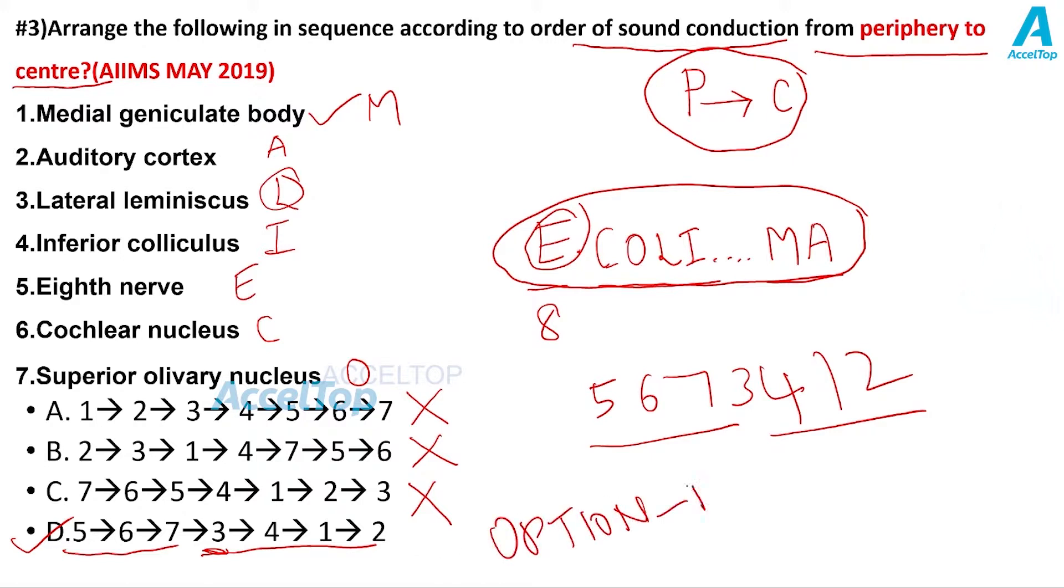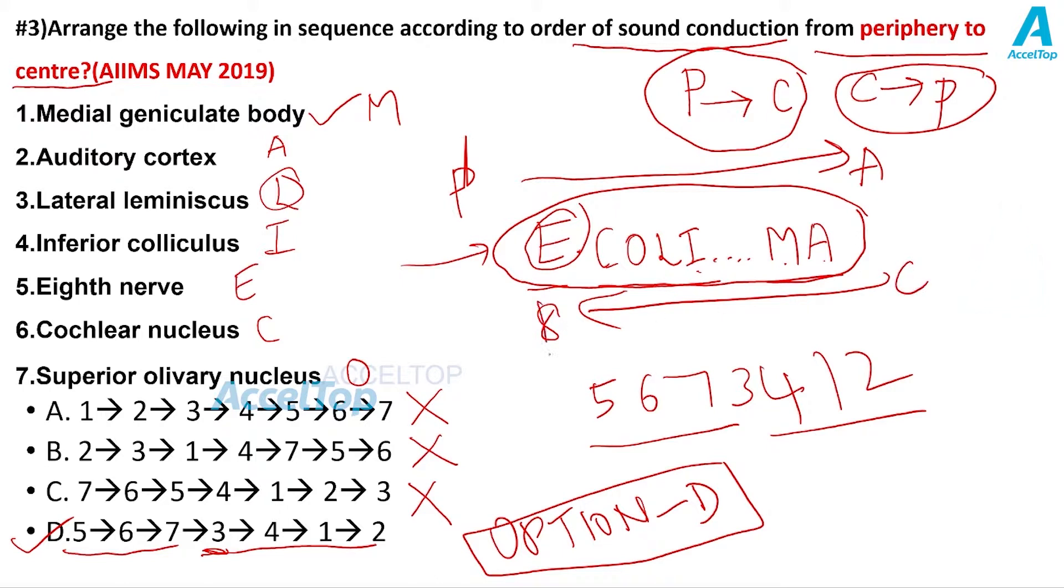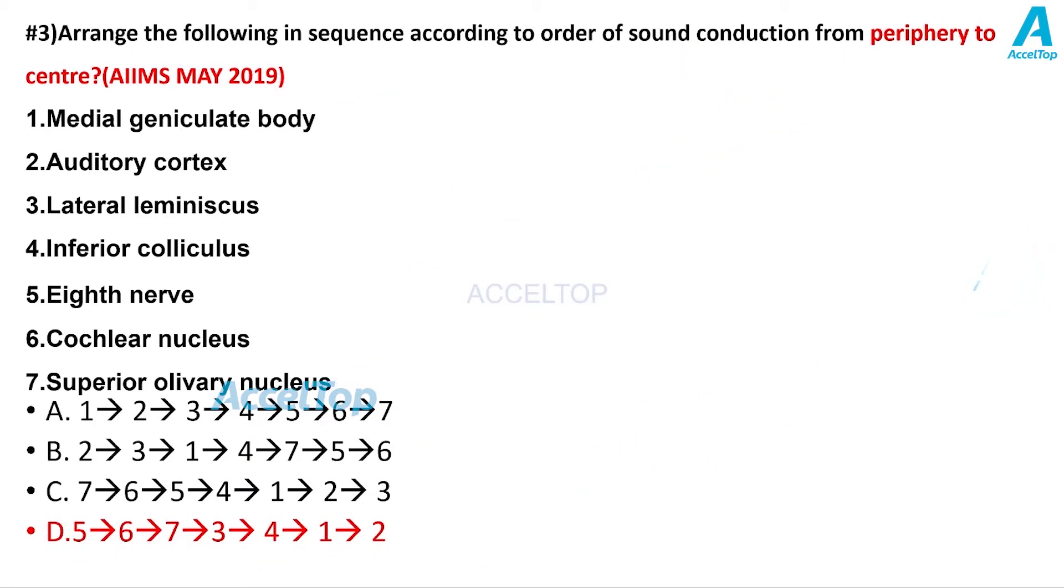So very important thing here is you remember the mnemonic E. coli M.A., auditory pathway. Based on that whatever order they ask, you need not worry. In this question they have asked periphery to center. They have asked to arrange from periphery to center. Probably in the next stage exam they will ask from center to periphery. So then the mnemonic just reverse the mnemonic. If from periphery to center it is E. coli M.A., if from center to periphery it is the reverse of this. You just arrange the sequence of options from this order.